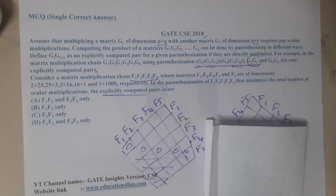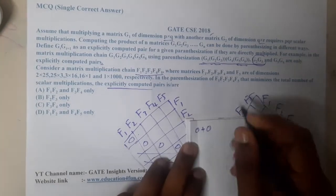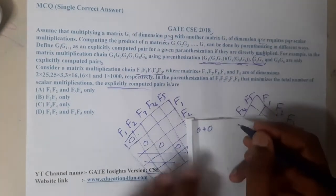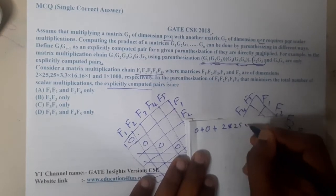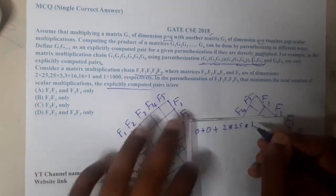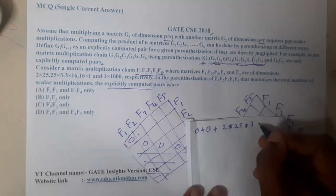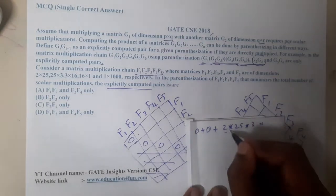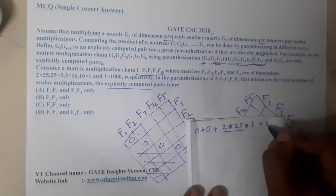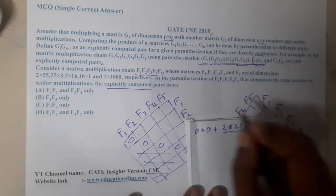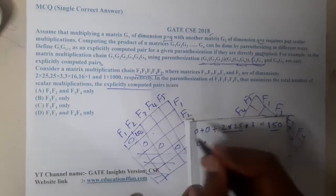Let's start calculating. For f1×f2, the result is 0 + 0 + 2×25×3. So 25×2 = 50 and 50×3 = 150. The scalar multiplications for multiplying f1 with f2 is 150.